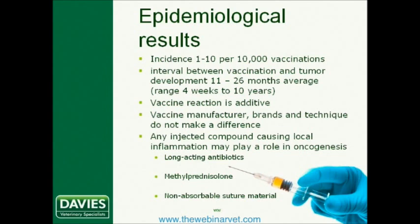Contrary to some early reports and theories, no single vaccine manufacturer or vaccine type, including the use of aluminium adjuvants, has a higher or lower association with the development of soft tissue sarcoma. In other words, it has not been possible to make an association between specific vaccines and tumour development. Additionally, vaccine practices such as needle gauge, syringe reuse, using multi-dose vials, mixing vaccines in a single syringe, and a particular syringe type don't appear to have any role in the development of tumours.